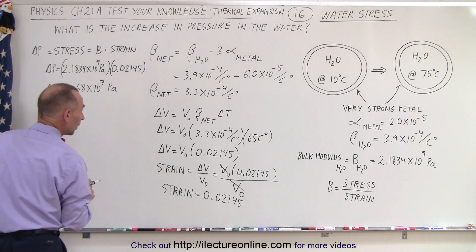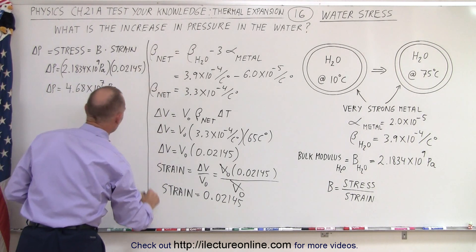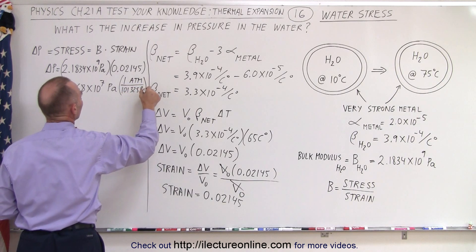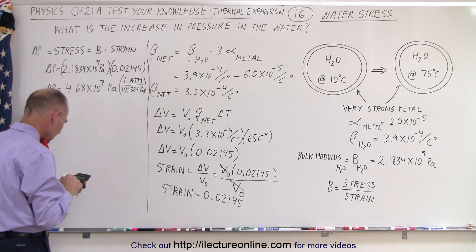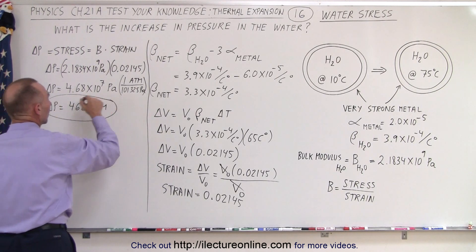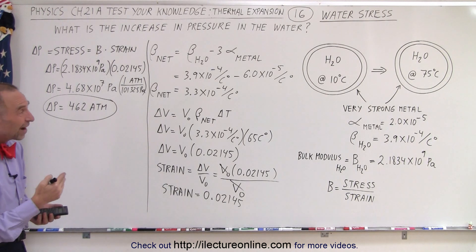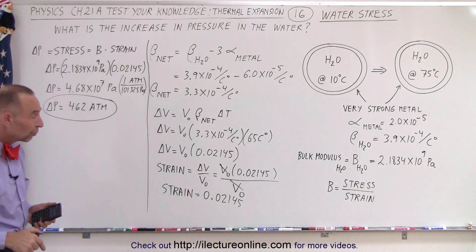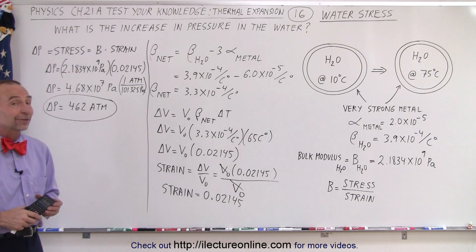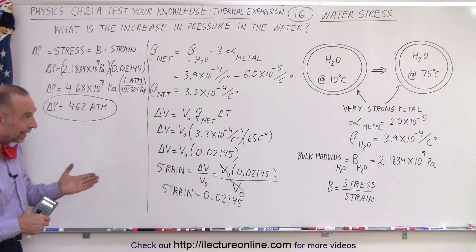We can convert that to atmospheres. Multiplying by 1 atmosphere equals 101,325 Pascals — dividing 4.68 times 10 to the 7 by 101,325 — the change in pressure equals 462 atmospheres, which is quite remarkable. Imagine a big metal ball filled with water: raise the temperature a mere 65 degrees centigrade and the pressure inside increases to an enormous 462 times atmospheric pressure. That is because of the much greater expansion coefficient for water compared to the expansion coefficient for the metal. And that is how it's done.